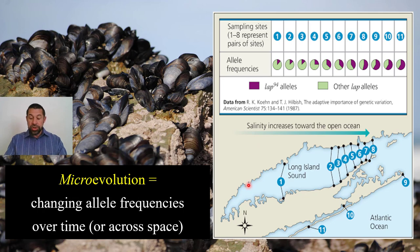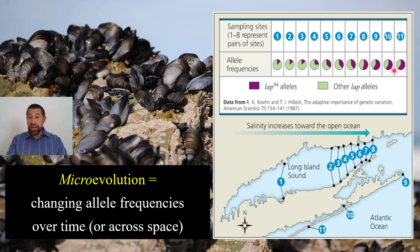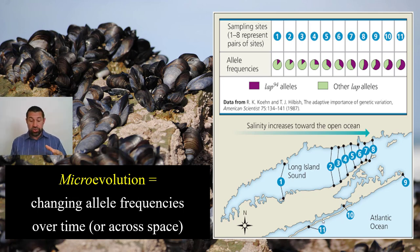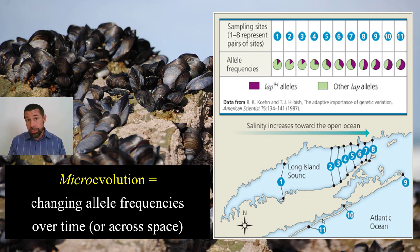However, as we move out into Long Island Sound and out to the open ocean sites at populations 10 and 11, we see the proportion of this allele, LAP-94, dramatically increase. There's selection for it as we move to highly salty water. We'll come back to microevolution — changing allele frequencies across both space and time — in the next two lectures, when we talk about the Hardy-Weinberg equilibrium equation and the evolution of populations.